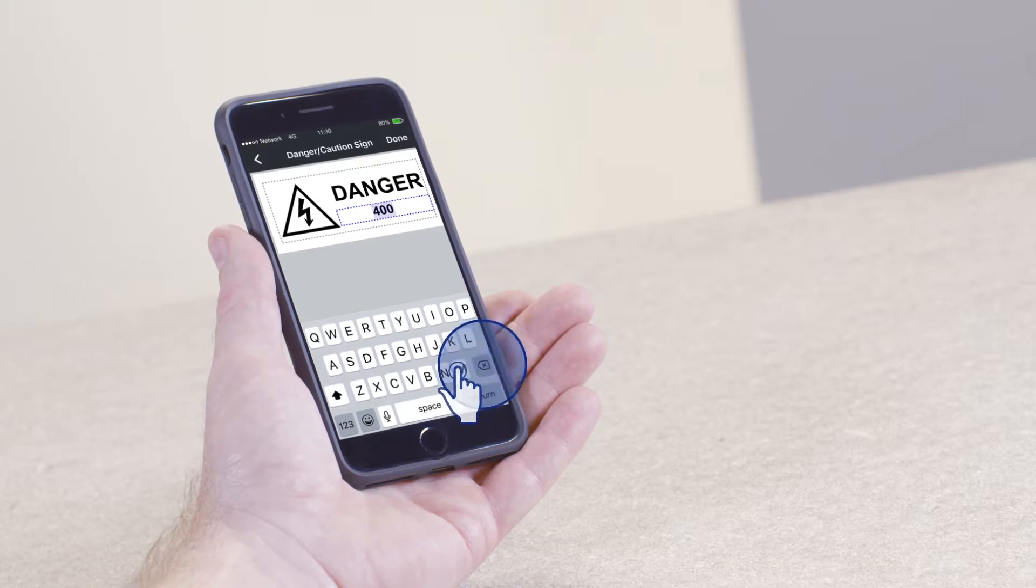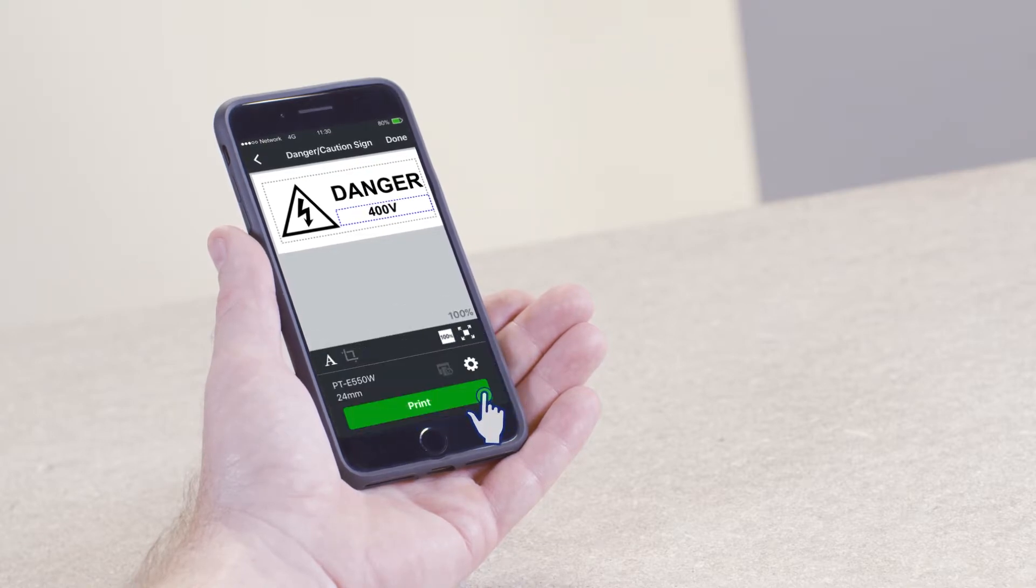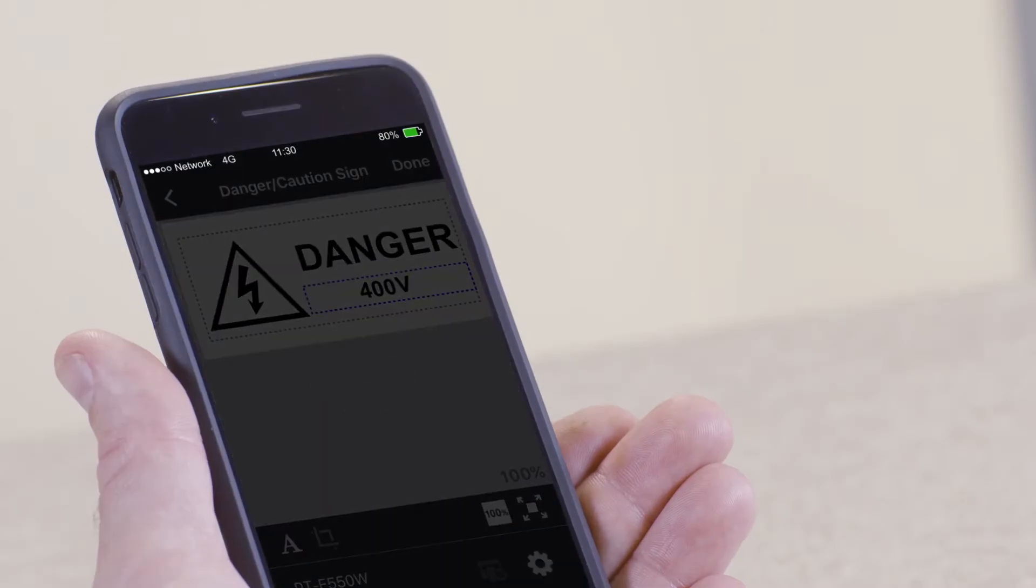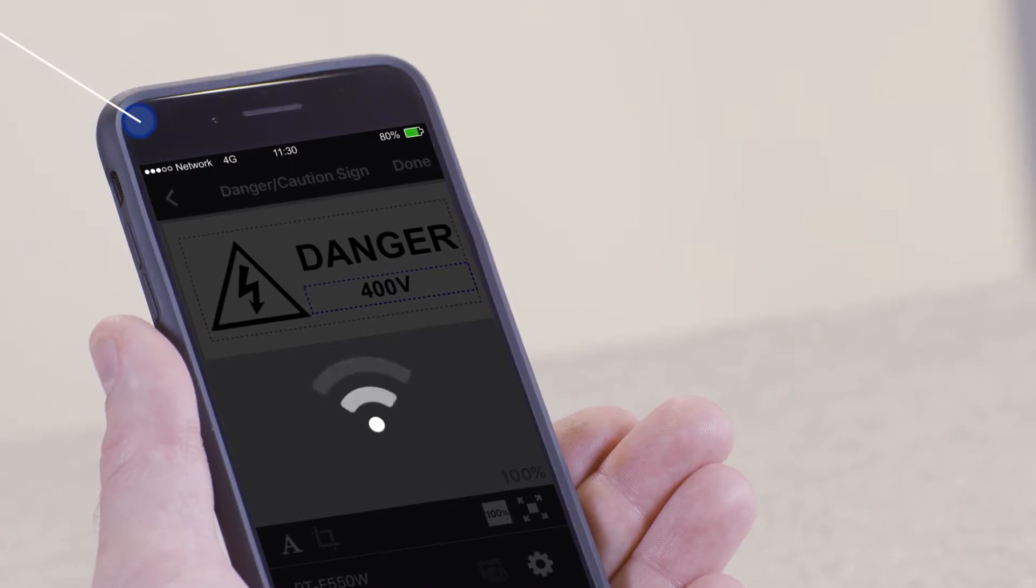Once in edit mode, you can alter the text as required. When you have finished editing the label, tap Print. The label will now be sent wirelessly to the printer.